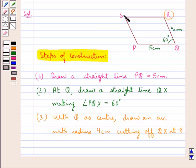Now next we need to locate the point S as we know that in a parallelogram opposite sides are equal. So this means if PQ is 5 cm then RS would also be 5 cm and if QR is 4 cm then PS would also be 4 cm.